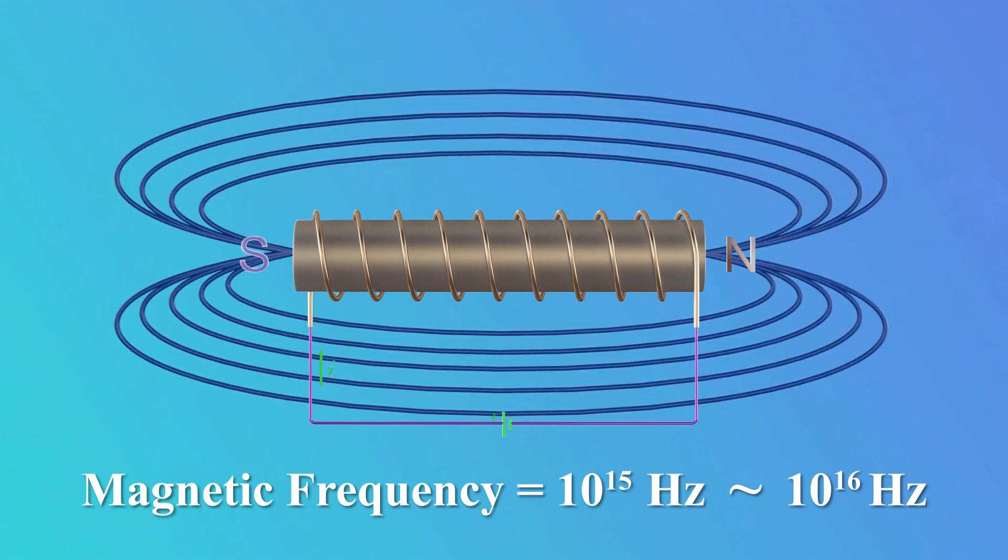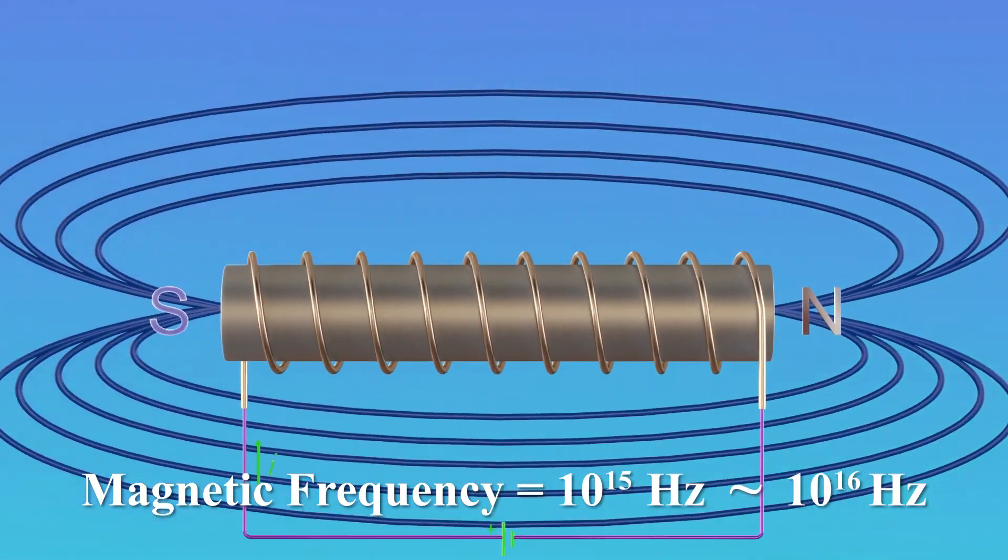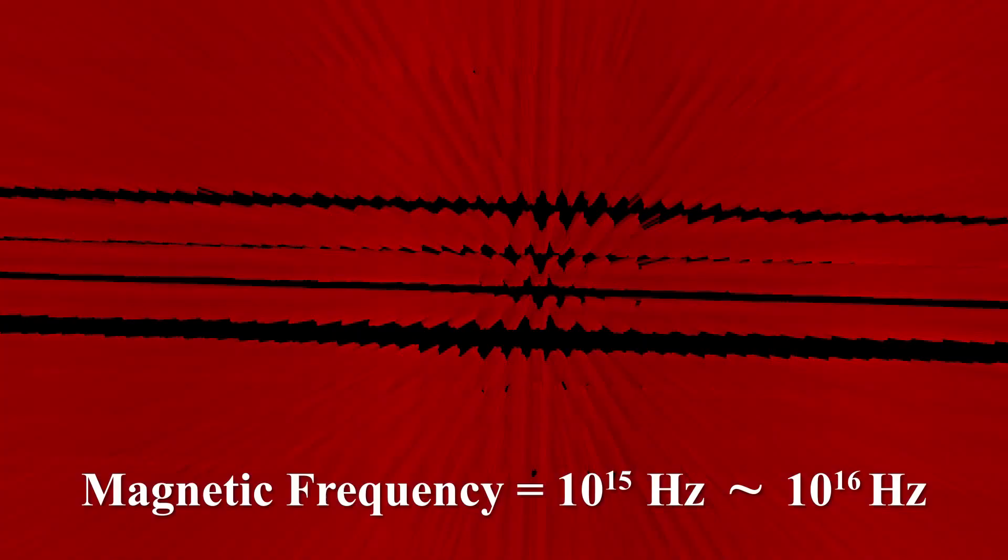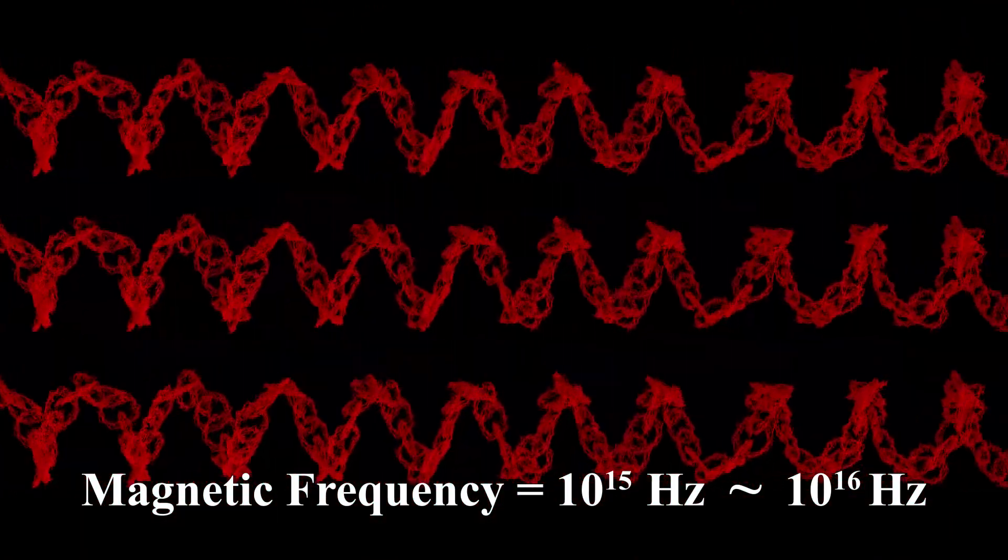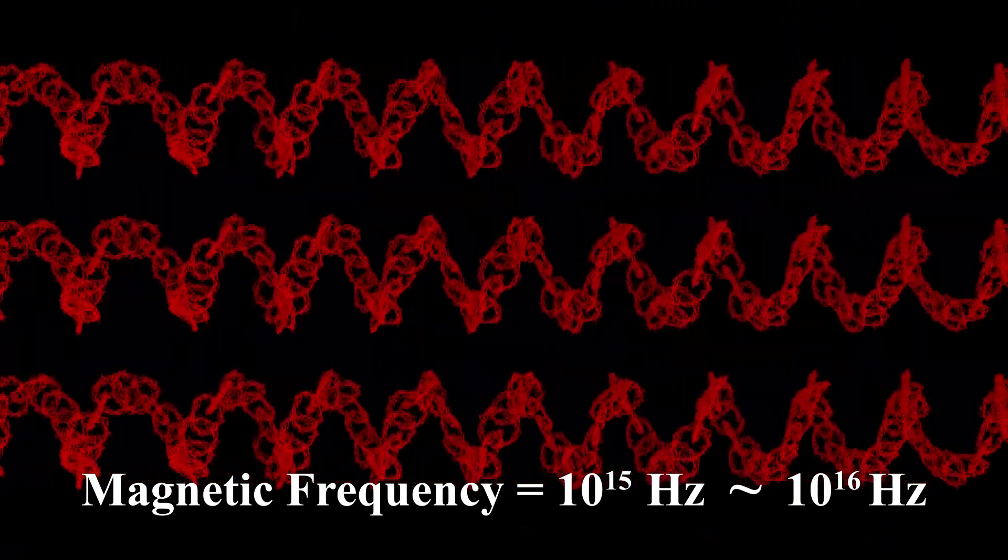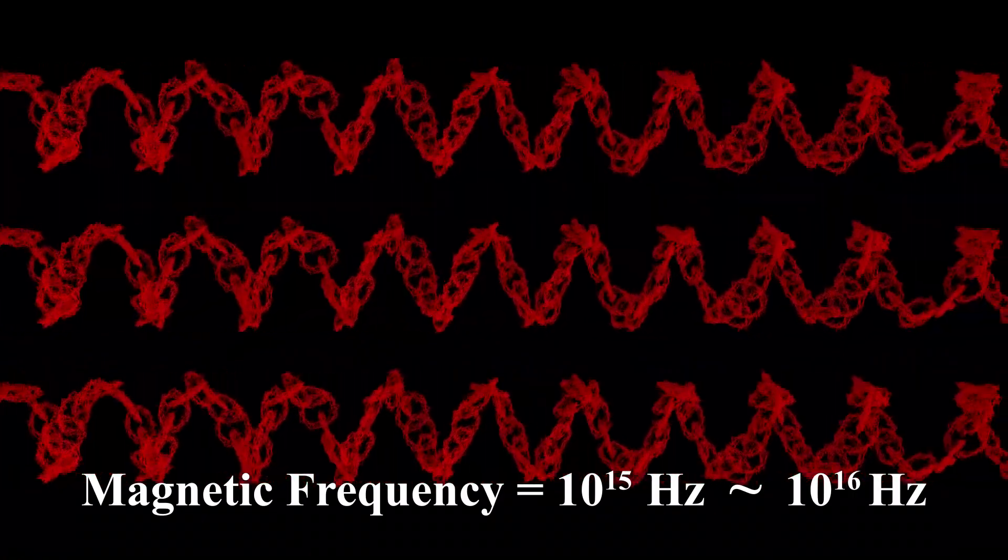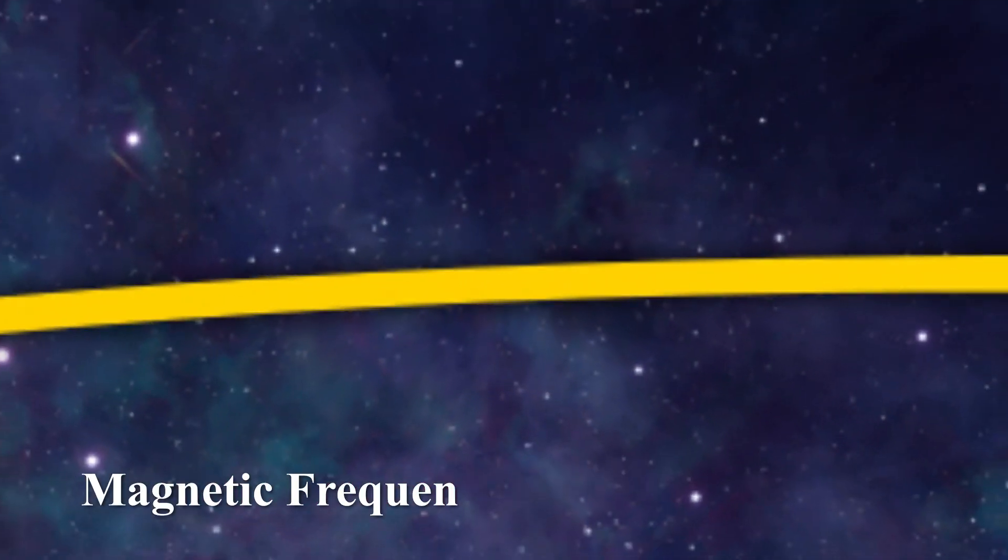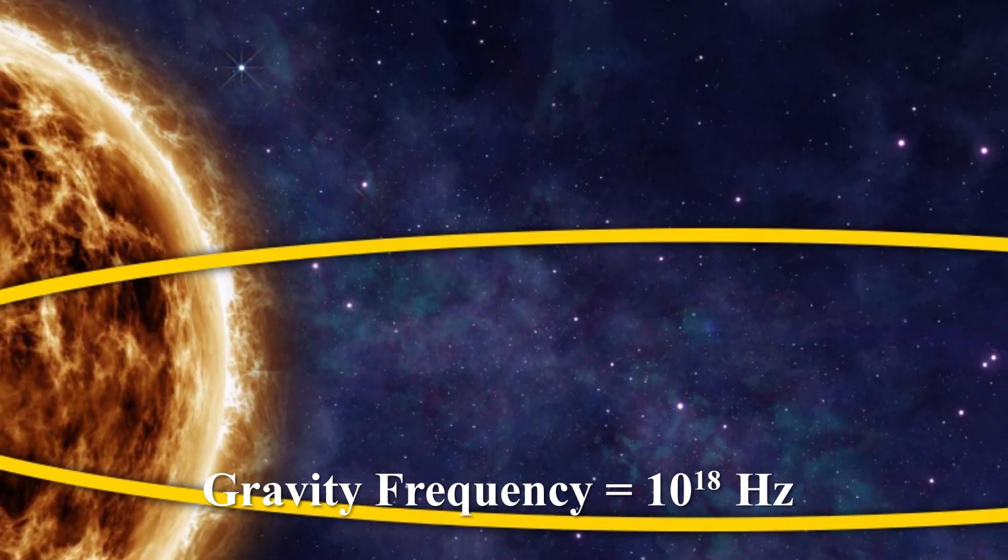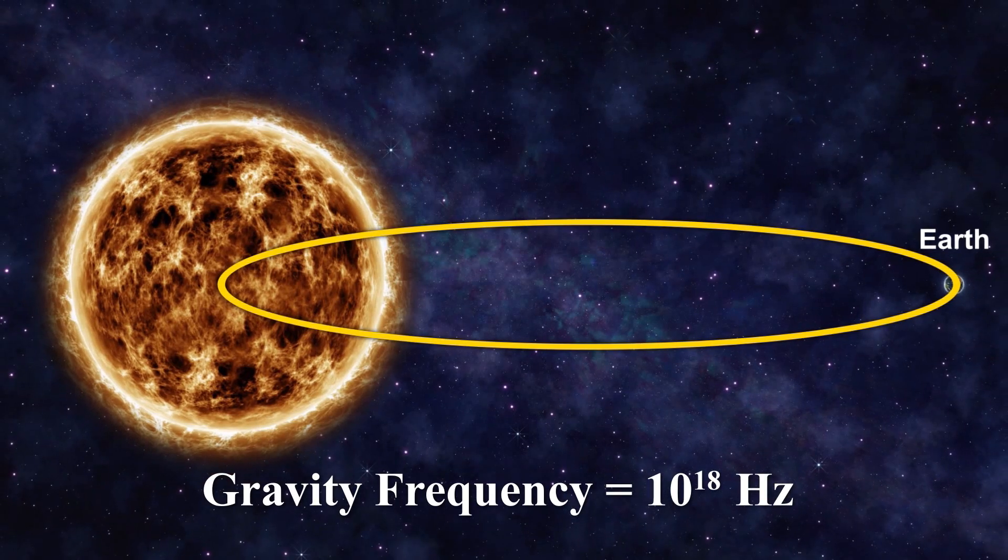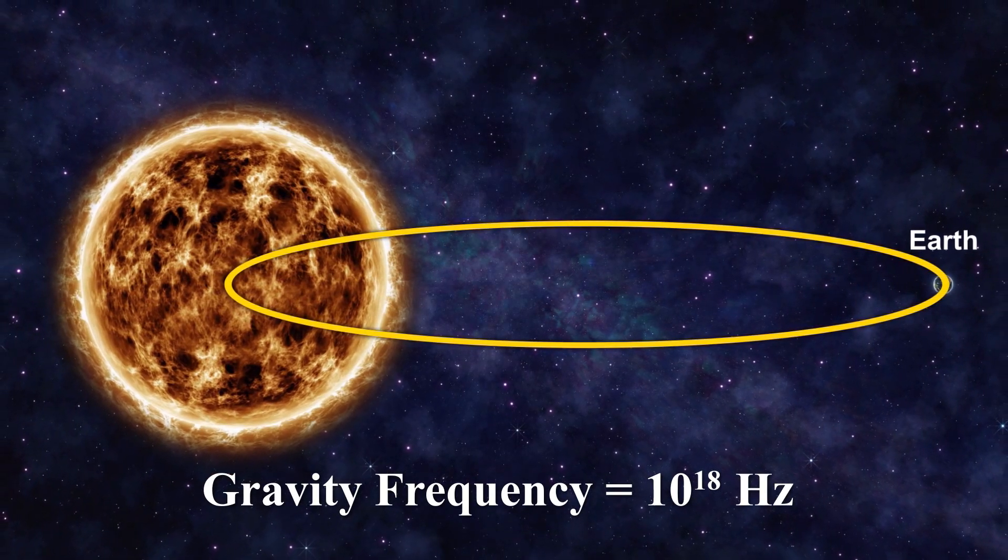Therefore, considering the chained structure of both magnetic and gravitational waves, if we can change the frequency of magnetic waves and increase it to about 10 to the power of 18 Hz approximately 100 times, we can say that we have created artificial gravitational waves, waves that have the ability to overcome gravity.